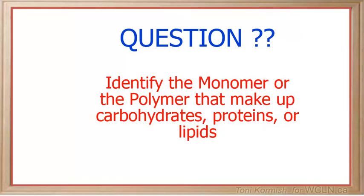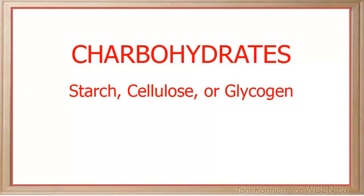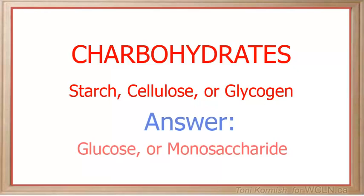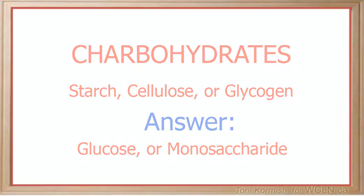You will have to answer questions that ask you to identify the monomers or polymers for each of the major food groups we are studying here. In the case of carbohydrates, if I asked you what the building blocks of starch, cellulose, or glycogen are, you could say glucose, or depending on the question, you might also answer monosaccharide.